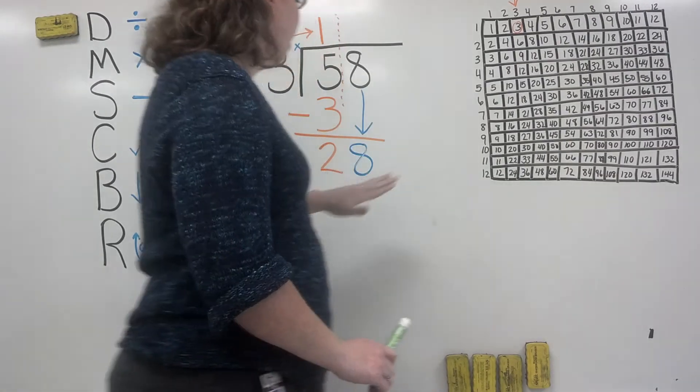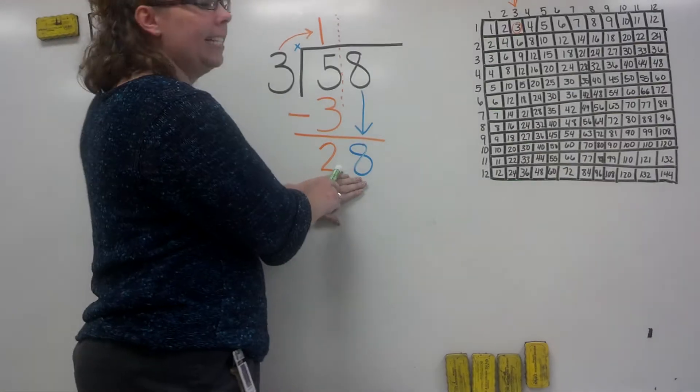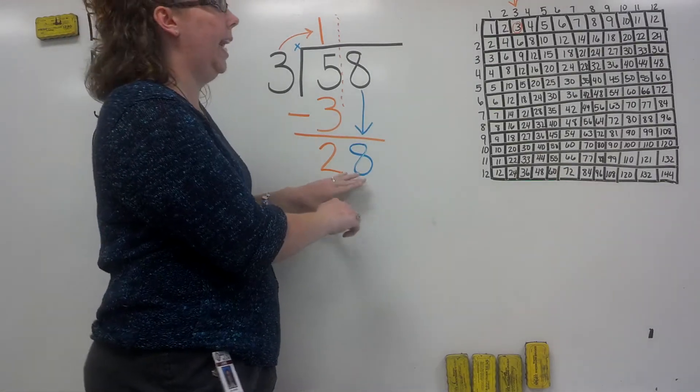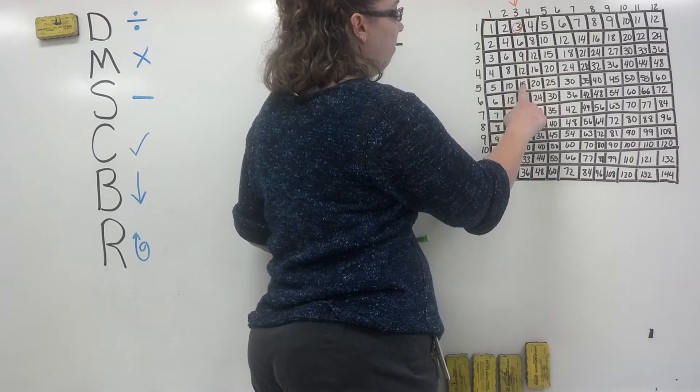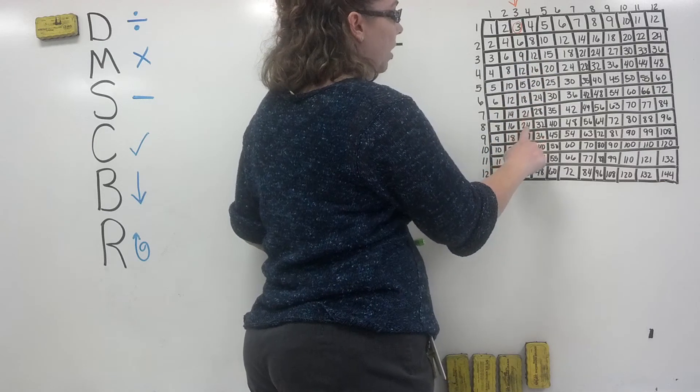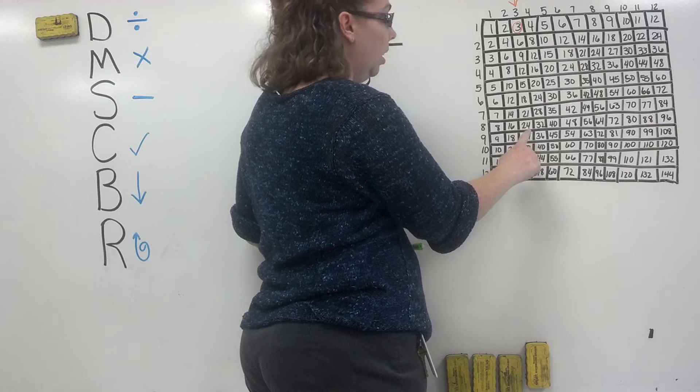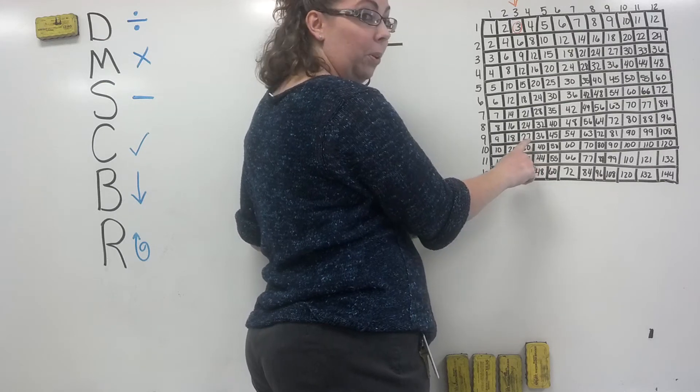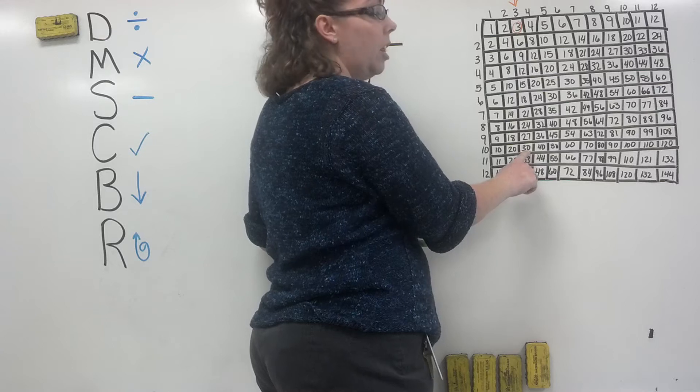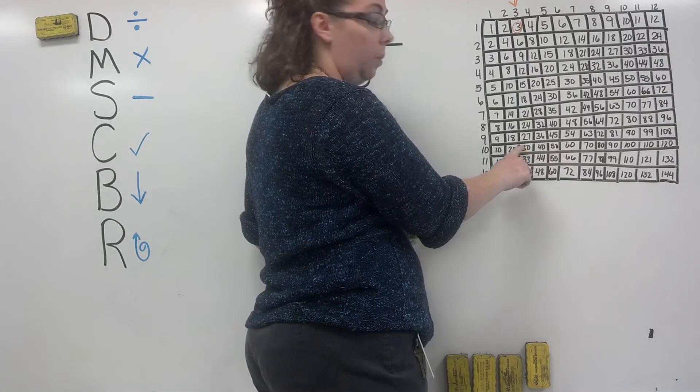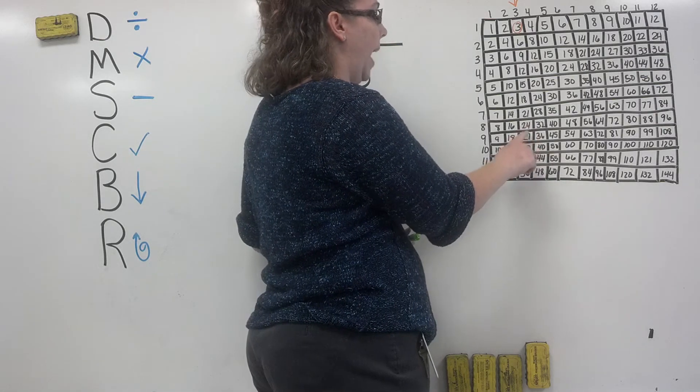Remember we're using our 3 here, so we're going to go back to the threes column and find a number that is less than or equal to 28. Let's go down: 3, 6, 9, 12, 15, 18, 21, 24, 27—that's pretty close to 28. Let's check our next number: 30. Thirty is more than 28, so we can't use that number. We need to go back up one.